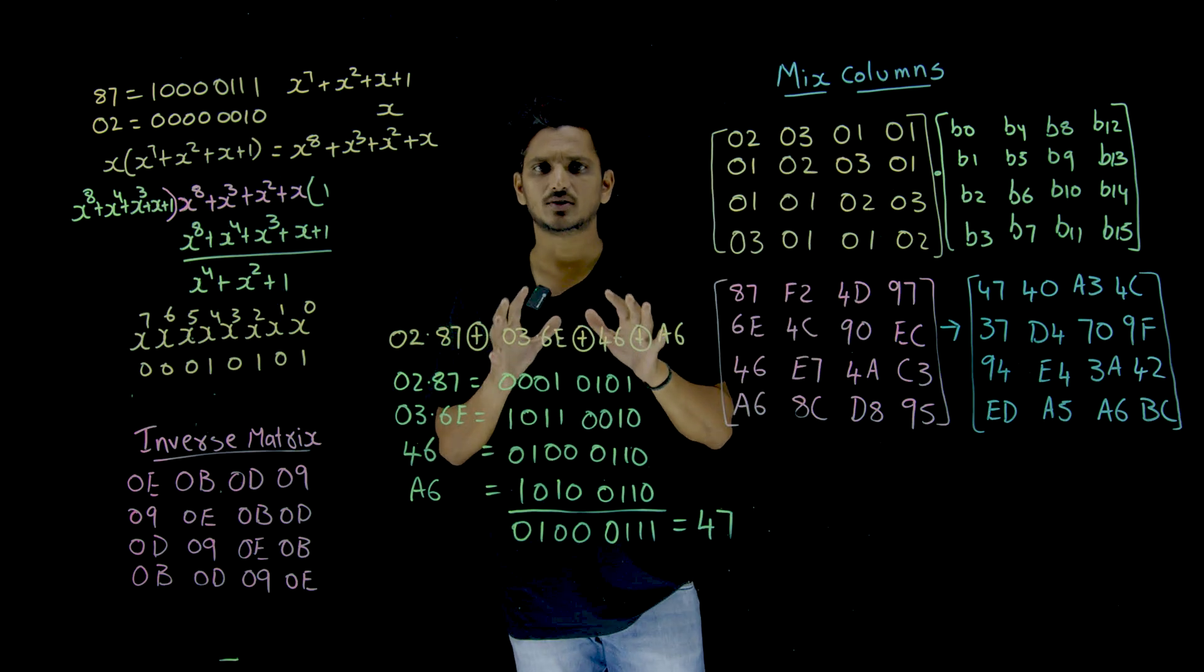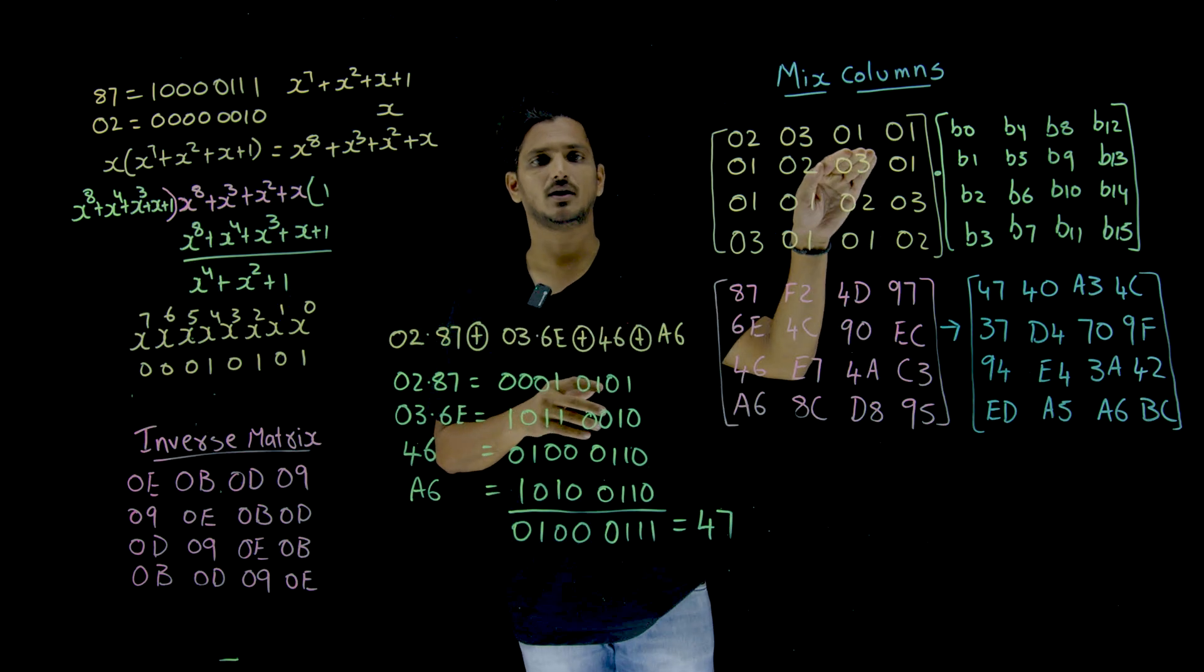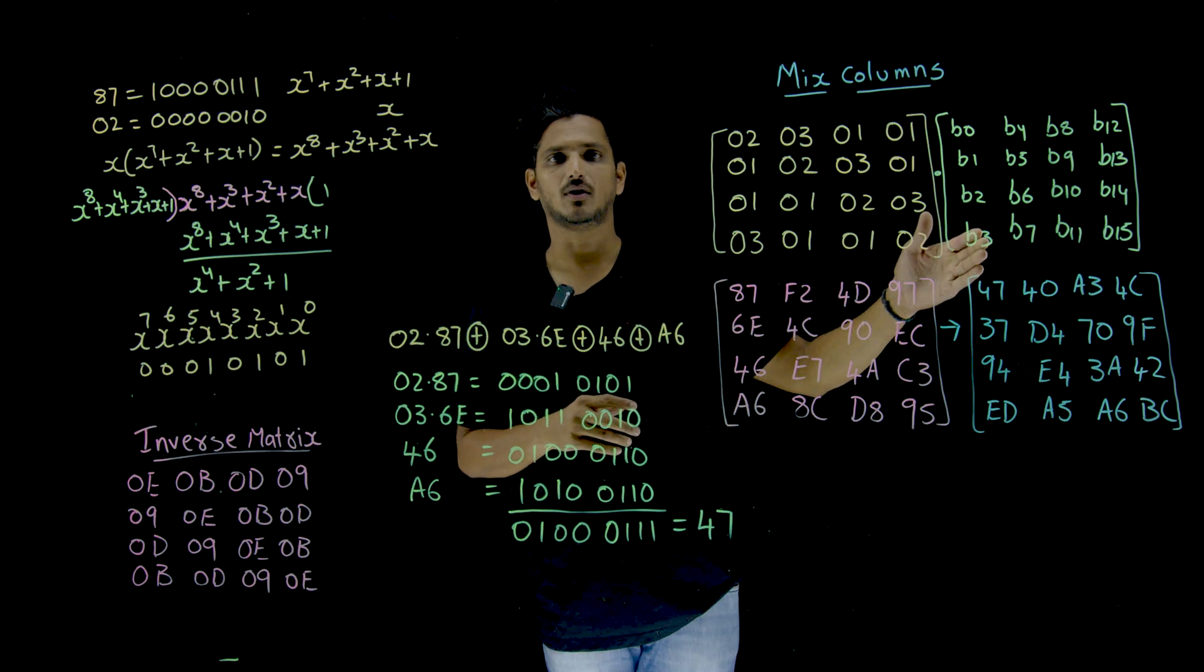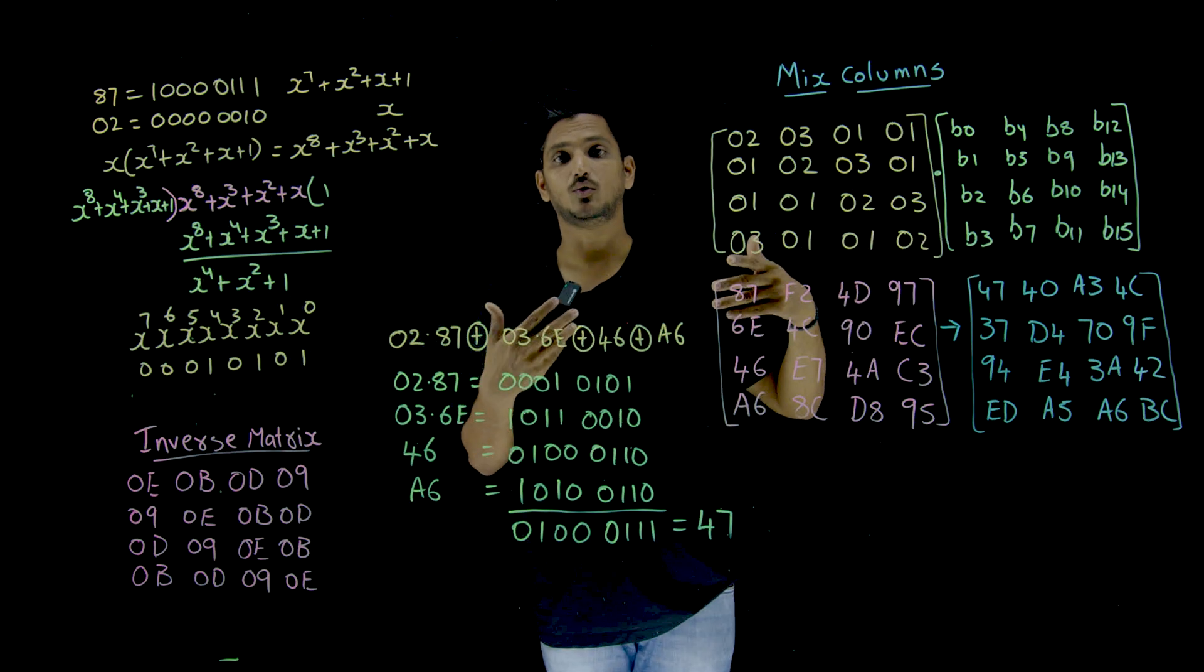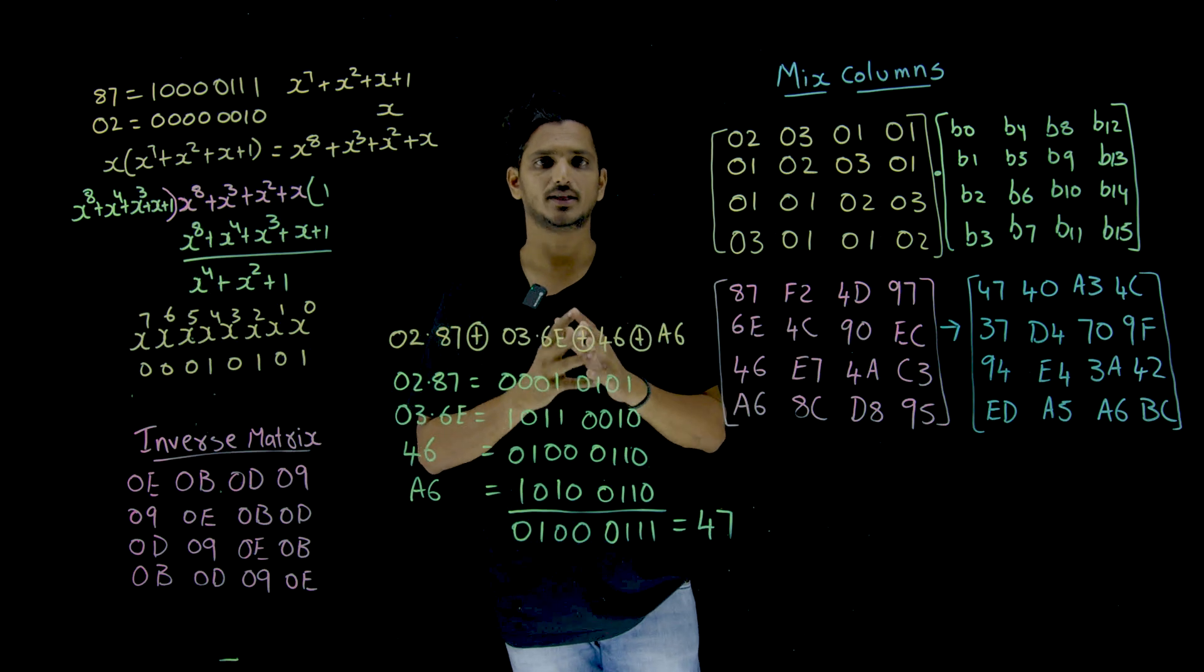Just normal constant matrix multiplication. Means take the row, multiply by column. Take the row, multiply by the column. That is how we are going to do multiplication here. With the example you will get good clarity.